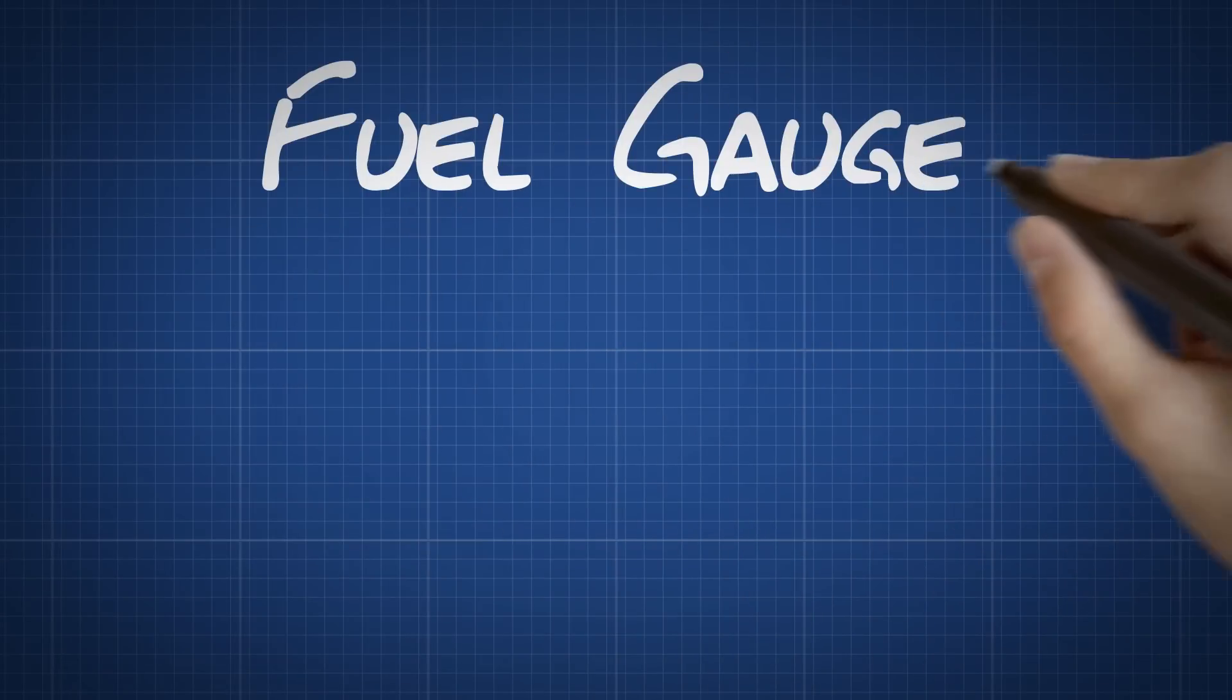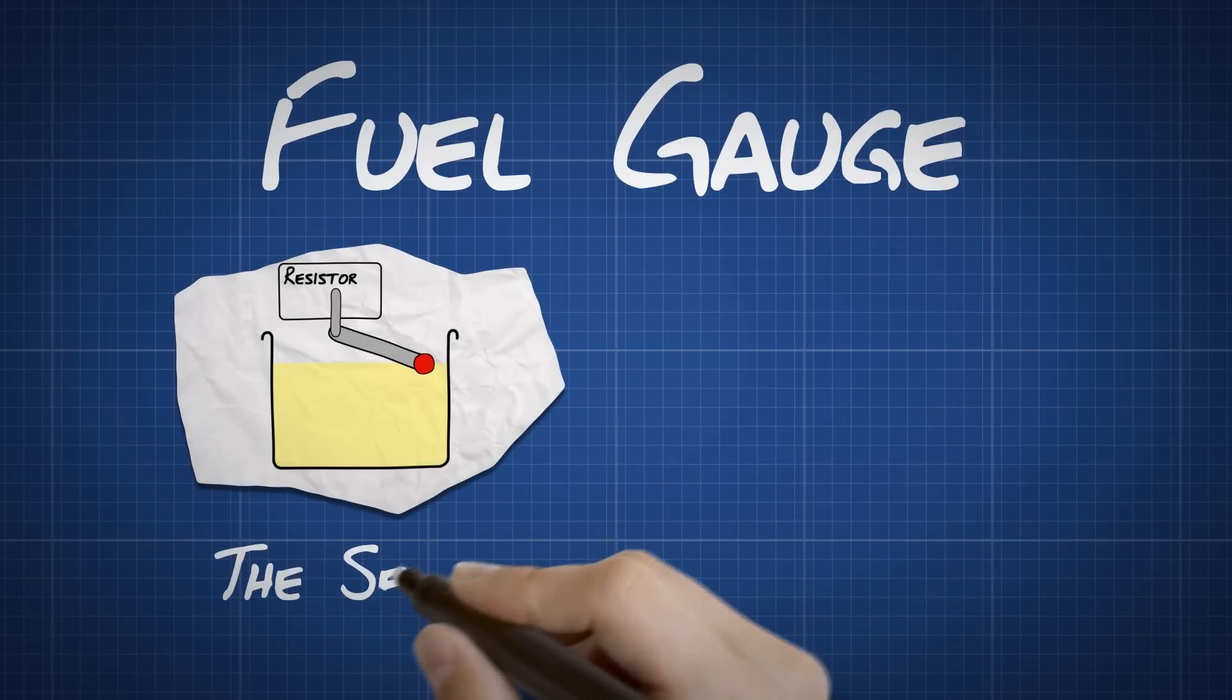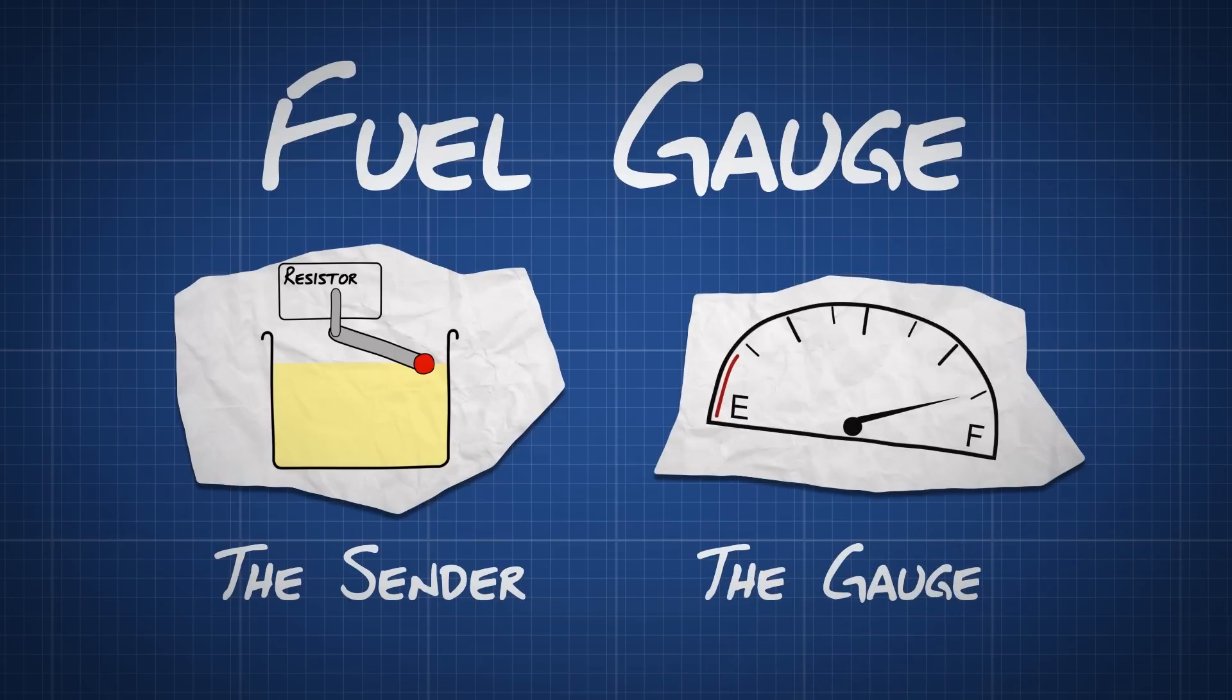How does a fuel gauge work? There are two main parts to a fuel gauge. The sender, which measures the level of fuel in the tank, and the gauge, which displays that level to the driver.